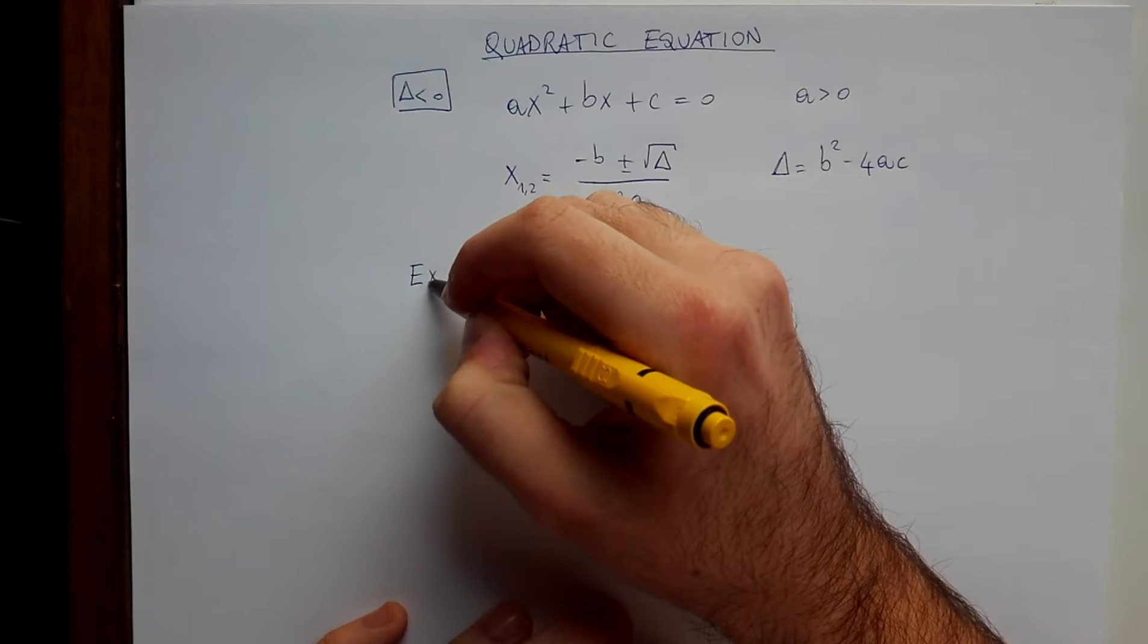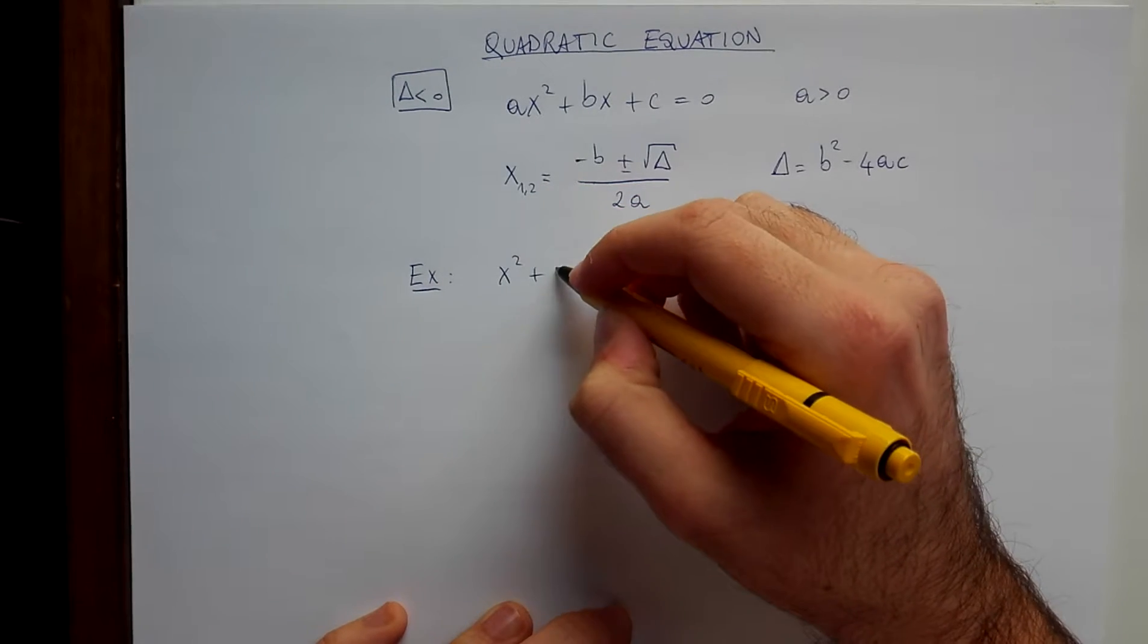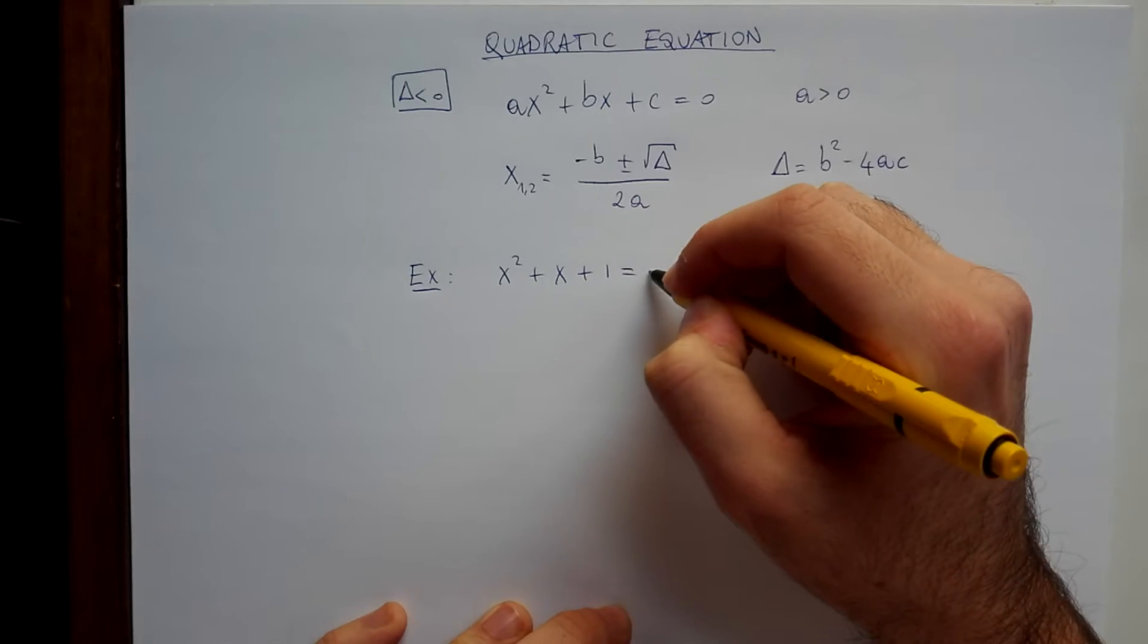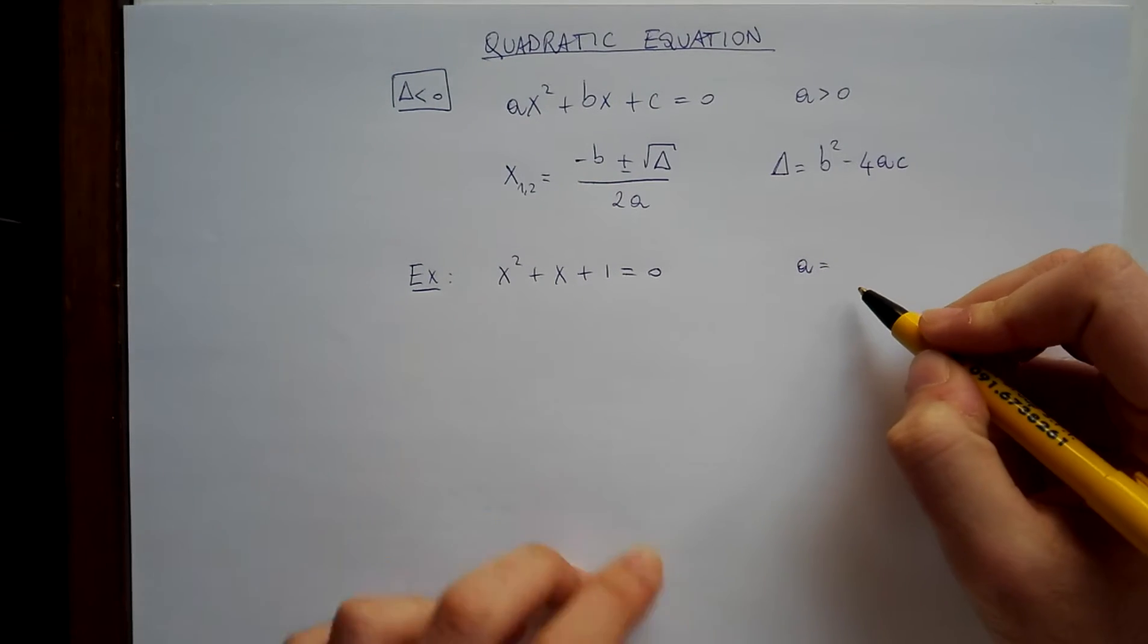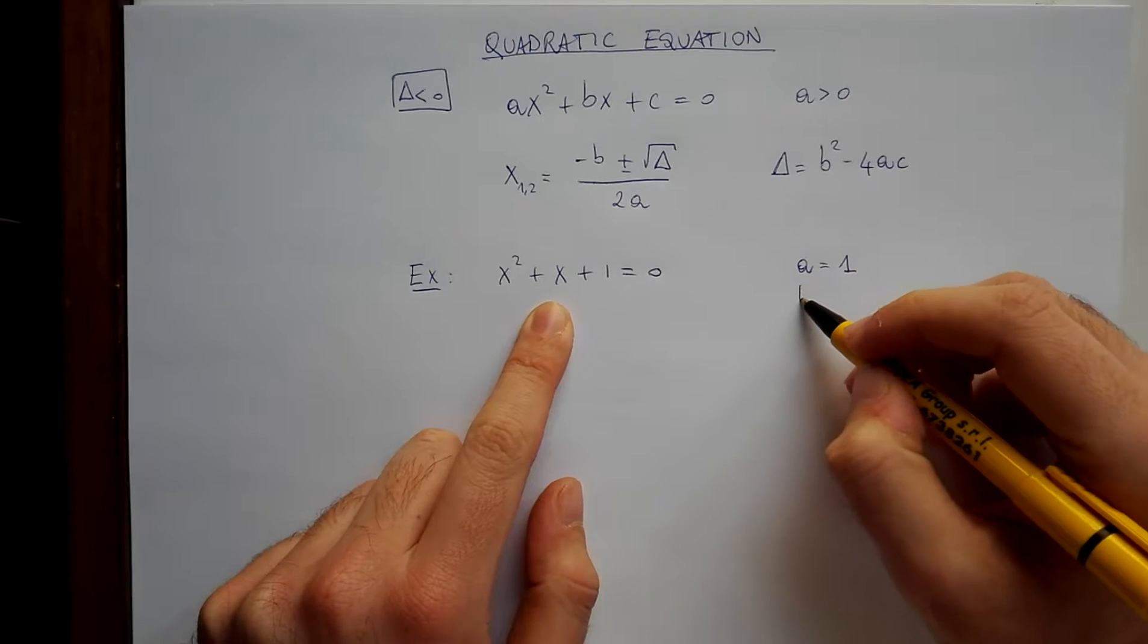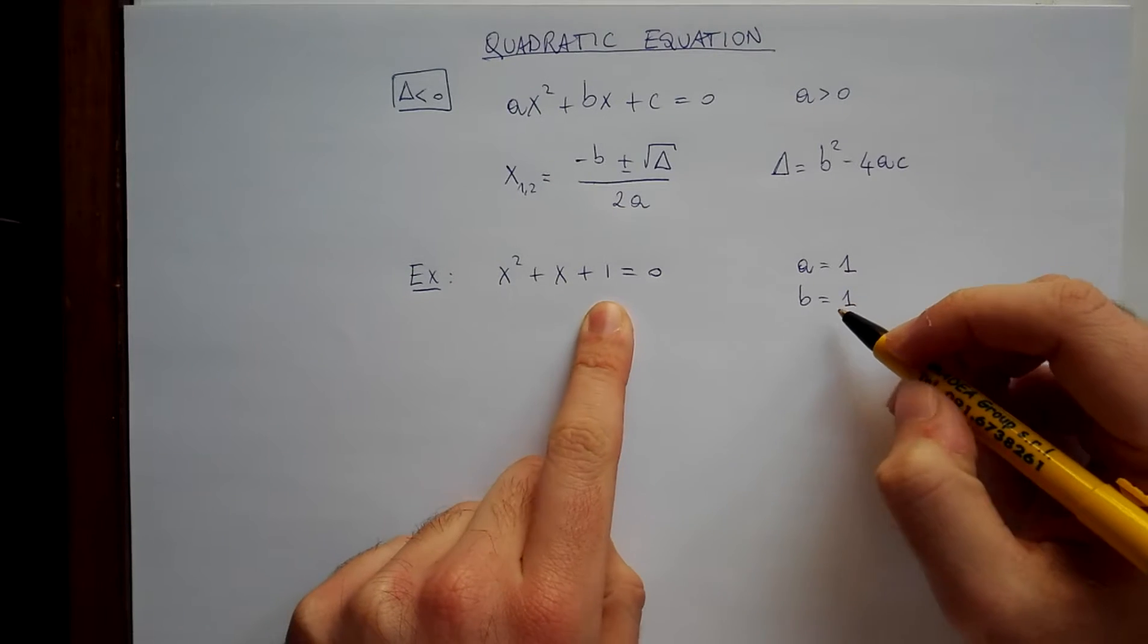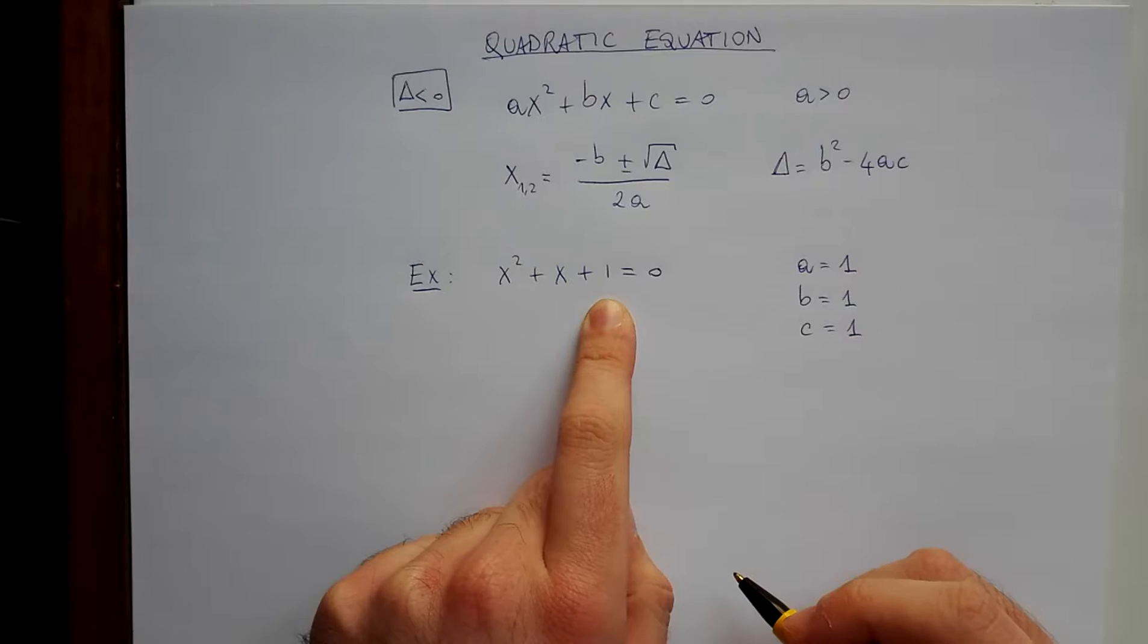Let's see the example. Consider the quadratic equation x squared plus x plus 1 equals zero. Let's write the coefficients: a is the coefficient of x squared, so 1, b is the coefficient of x, so 1, and c is the number, 1.